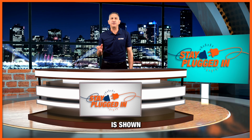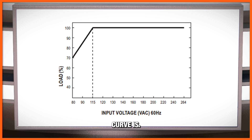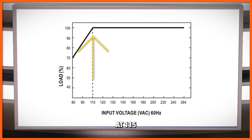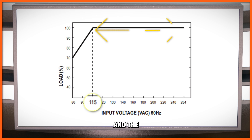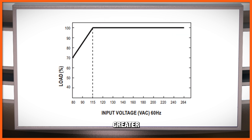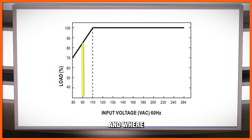The other common shape you'll see in input derating curves has a single flat portion. In this graph, this is a 200-watt power supply, and you can see that you can use 100% of the output power at 115 volts or above, up to the maximum input voltage of 264 volts AC. However, if your input voltage is less than 115 volts but greater than the minimum input of 80 volts, the power supply will function but you will need to derate it. For instance, if your input voltage is at 90 volts AC, draw a line upward from 90 volts AC and where it intersects the curve, that is where your load percentage will be.